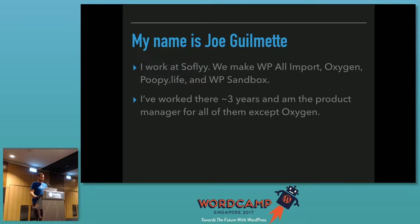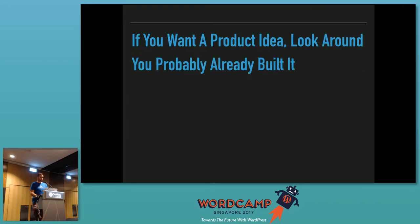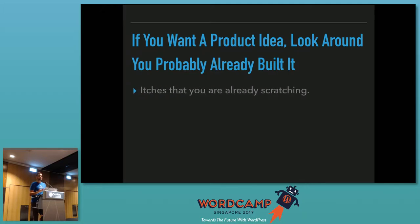I've worked for SoFi for about three years and I'm the product manager for everything except for Oxygen. This talk is about how we build products. We've been a business for about eight years now. The first thing when you're building a product, the first question you probably have is: what do I build? Looking for a product idea can be a little bit intimidating, and I think the easiest thing to do is to look around, because you've probably already built it.